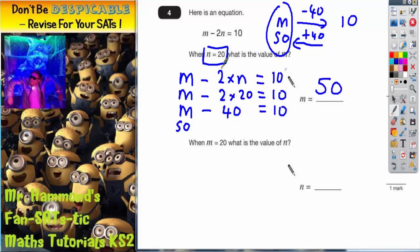You should always check your answer works. So if we're saying that this mystery number is 50, then when we take away 2 lots of n and n was 20, do we get 10?